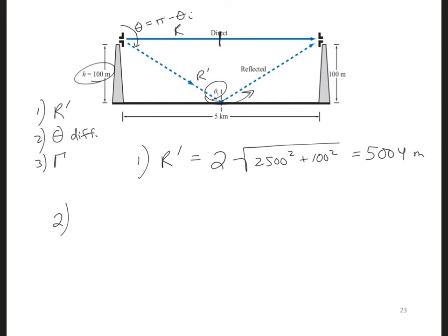For number 2, the new propagation angle is theta is equal to pi minus theta_i, which is pi minus arc tangent 2,500 over 100. And that's equal to 1.61 radians.